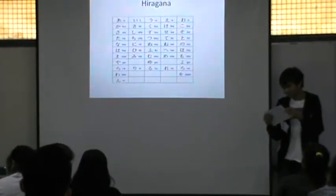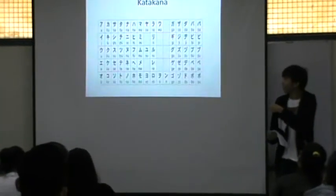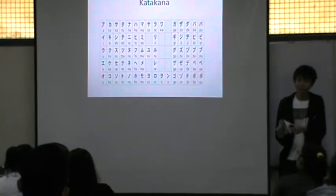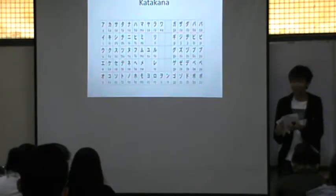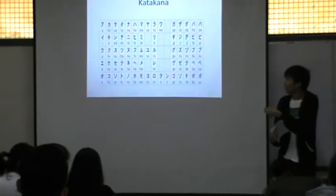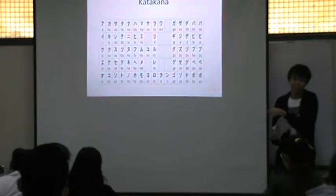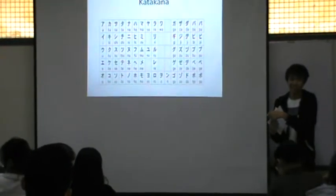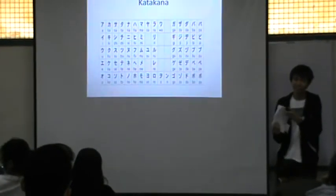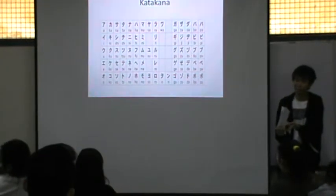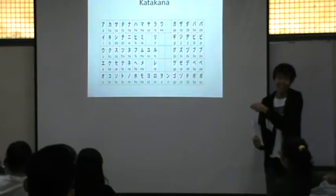The next is katakana. Katakana is used for borrowed words from other languages into Japanese. The katakana function is to write foreign words in the Japanese way. For example, Japanese words borrowed from English are written using katakana.